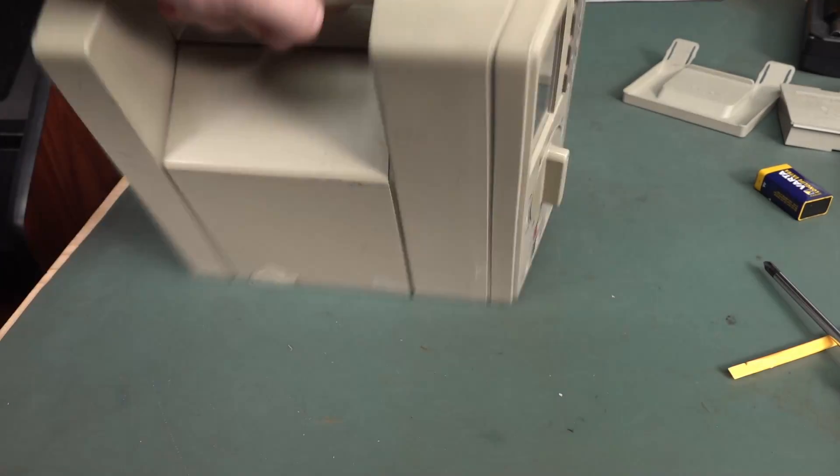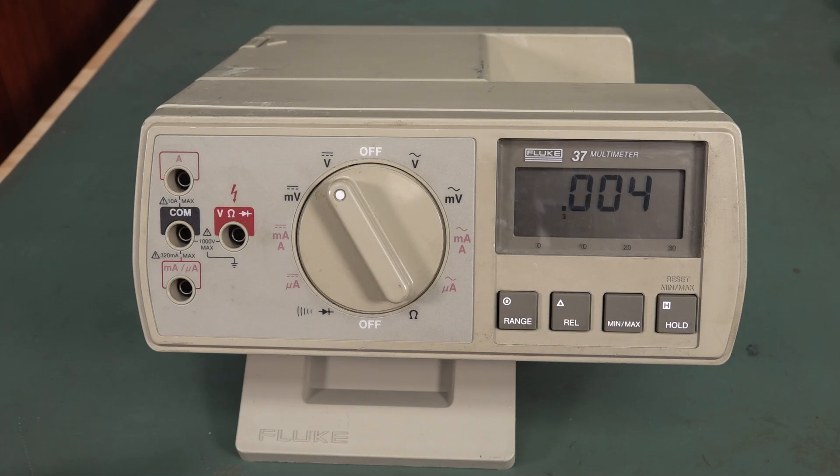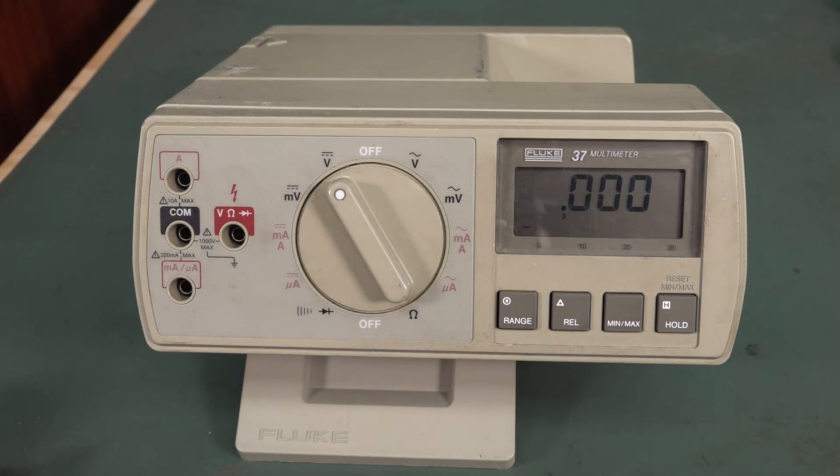So we just whack that on there like that. Bob's your uncle. But there you go. That's a look at the absolutely unique classic Fluke 37. Now we know the date from at least designed in 85, at least was released in 86 onwards.